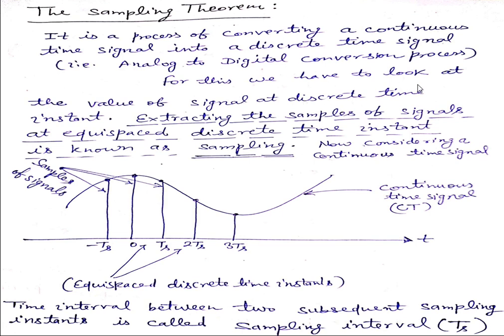For this, we have to look at the values of the signal at discrete time instants. That is, we have to extract the samples of signals at equispaced discrete time instants, known as sampling. This is a continuous time signal you can see in the diagram, and we have to get the different amplitudes at different time instants. But those samples should be at an equal interval, they should be equispaced in a particular time gap, that is Ts, that is called sampling time.